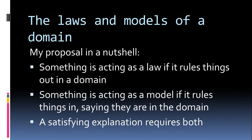That's the proposal on generality. Now here's my main proposal: something is acting as a law when it rules things out from a domain — 'in this domain, this never happens.' Something is acting as a model when it rules something in — 'in this domain, at least sometimes this happens.' To have a satisfying explanation you need to be able to do a little bit of both: say why what didn't happen didn't happen, and why what did happen did happen.